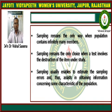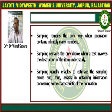Sampling remains the only way when the population contains infinitely many members. So sampling is important — it is the only method by which we can get results when the population contains infinitely many members.